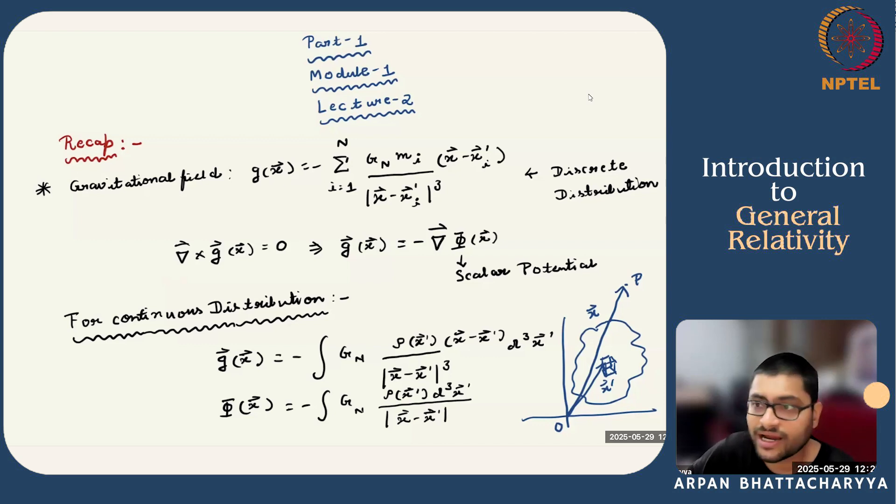Furthermore, we can generalize all these expressions for a continuous distribution, both the expression for g and the scalar potential for a continuous distribution. Xi prime is the position vector of the infinitesimal volume element within the extended body, and we are integrating over all x prime.